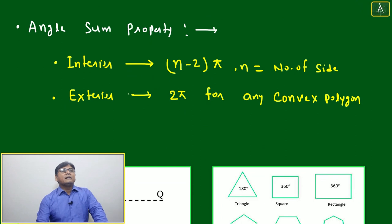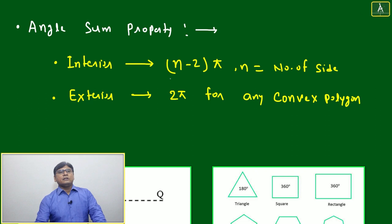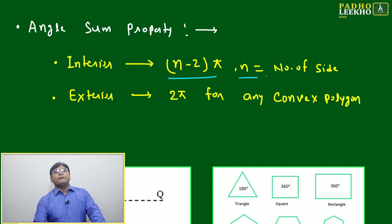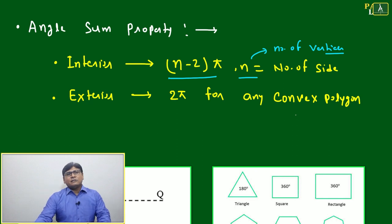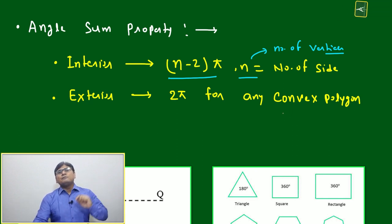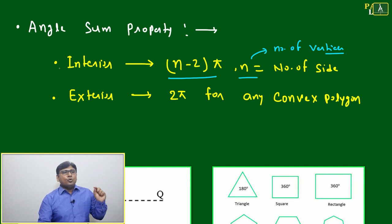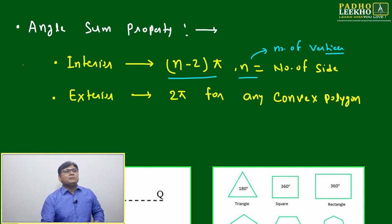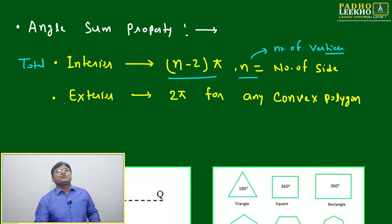Now we come to the angle sum property. The sum of interior angles of any polygon is always (n − 2) × π, where n is the number of sides or vertices — both are the same. For a triangle, n = 3 gives 3 sides and 3 vertices; for a quadrilateral, n = 4; for a hexagon, n = 6. So total interior angle sum equals (n − 2)π.